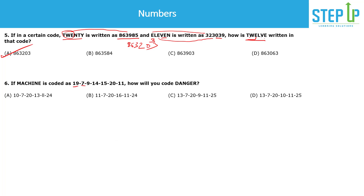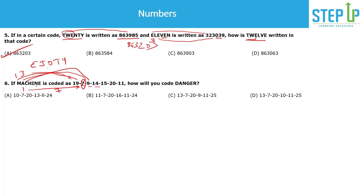Question 2: If MACHINE is coded as a sequence of numbers — 1, 2, 3, 4, 5, 6, 7 — what is the code for DAN? Let's check: M has place value 13 and is becoming 19, and A has place value 1 and is becoming 7. So 13→19 and 1→7 both involve adding 6. They are adding 6 to each letter's place value.